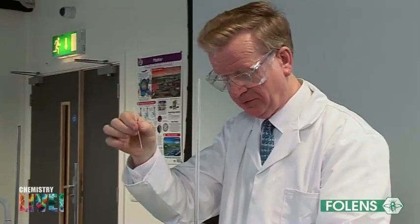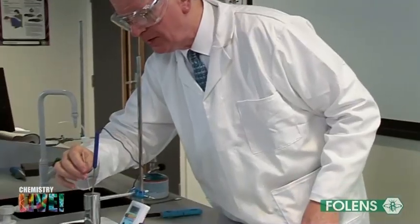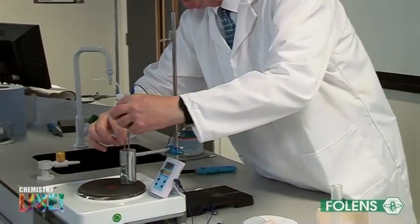Place the capillary tube in the aluminium melting point block on a hot plate and place a digital thermometer in the aluminium block.